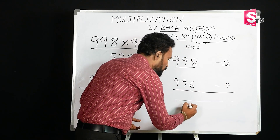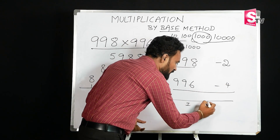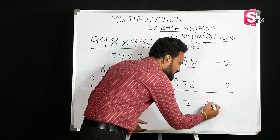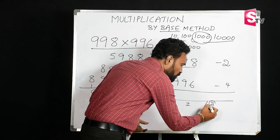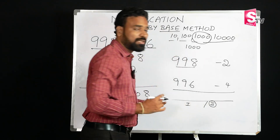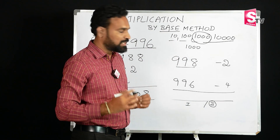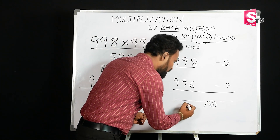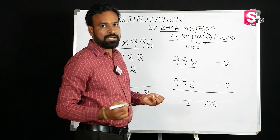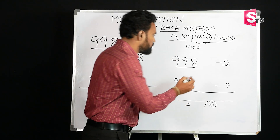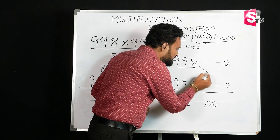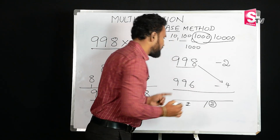We split the answer into two parts: the first part and the second part. The first part is simple — it is a cross subtraction.